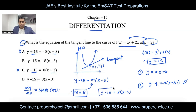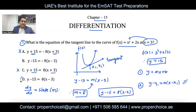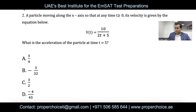This is how tangent line questions are approached. If a question only asks for the slope, just type the equation in the calculator at the given x value and you're done. Question number two: a particle is moving along the x-axis such that at any time t ≥ 0, its velocity is given by v(t) = 10 / (2t + 5).